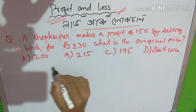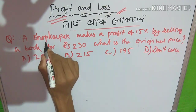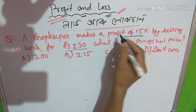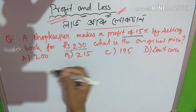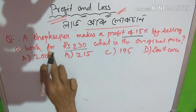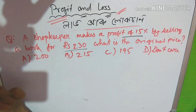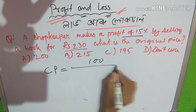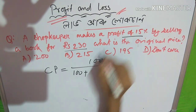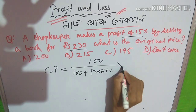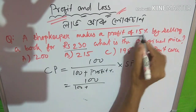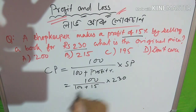By selling a book for Rs. 230, what is the original price? This book has 15% profit and the original price is a good price. I will use the formula: cost price equals 100 divided by 100 plus gain percentage, into selling price. The profit percentage is 15% and the selling price is 230.